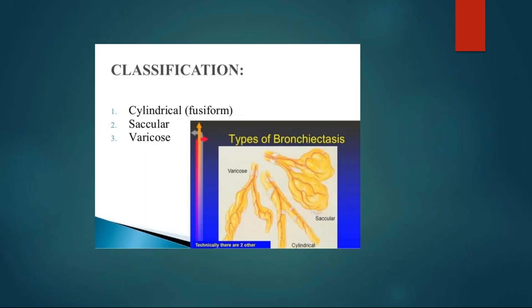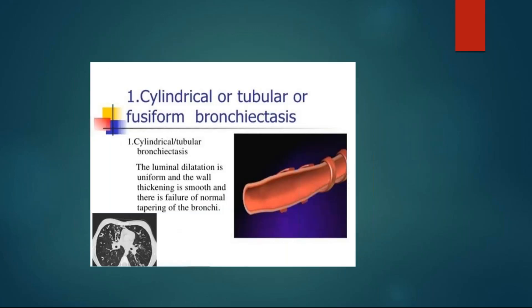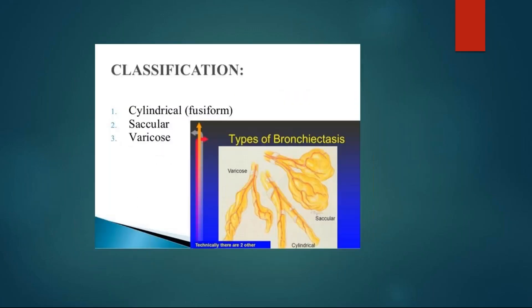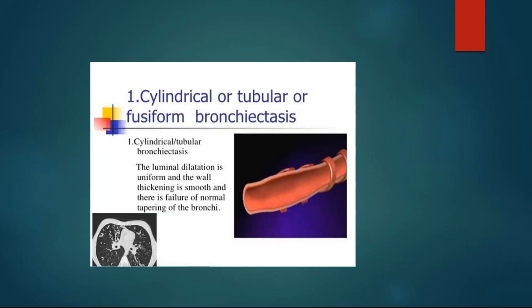Coming to the classification: bronchiectasis can present in three forms — cylindrical or fusiform, saccular, and varicose. In the picture you can see the saccular dilatations, cylindrical, and varicose types. Coming to the cylindrical type, also known as tubular or fusiform bronchiectasis, the luminal dilatation is uniform and the wall thickening is smooth.